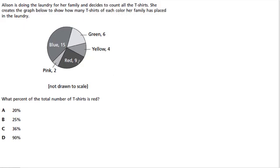So we have 9 red, 2 pink, 15 blue, 6 green, and 4 yellow. What percent of the total number of t-shirts is red? Now, red looks like it's close to one-fourth of this entire circle.